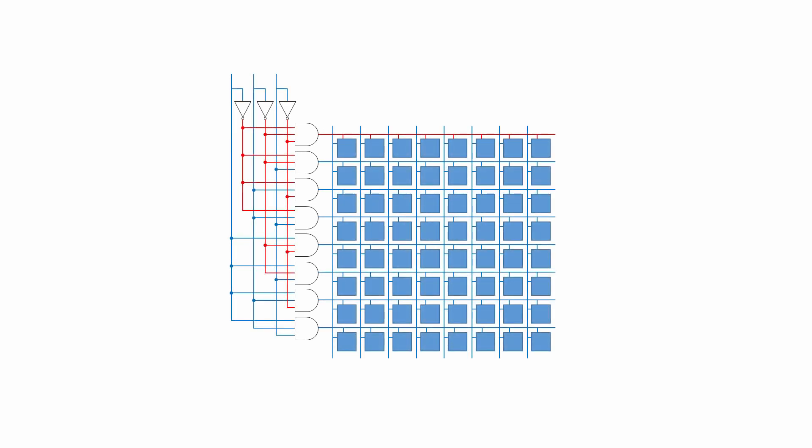Decoders have a number of applications, including selecting a row — also known as a word line — from an array of memory cells based on a binary row address.